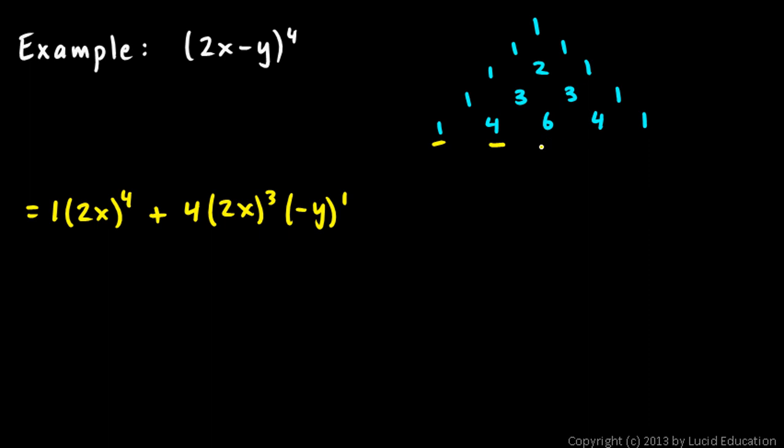And then the next term, plus 6. Now we're counting down on our 2x coefficients, so that's 2x squared, and we're counting up on the coefficients for the negative y, and don't forget the negative sign, negative y squared. And I'm running out of room, so I'm going to skip down to the next line.